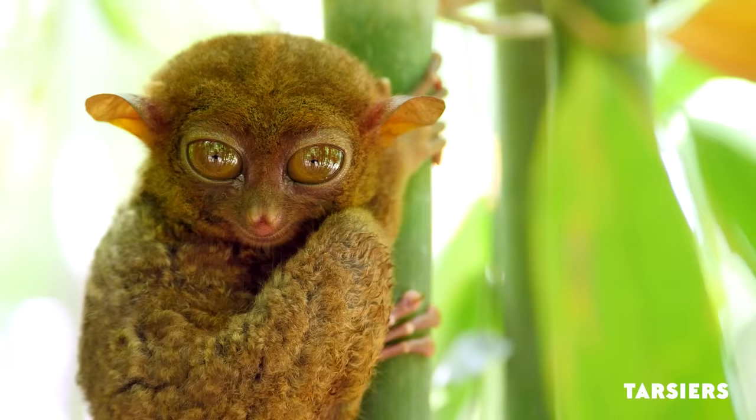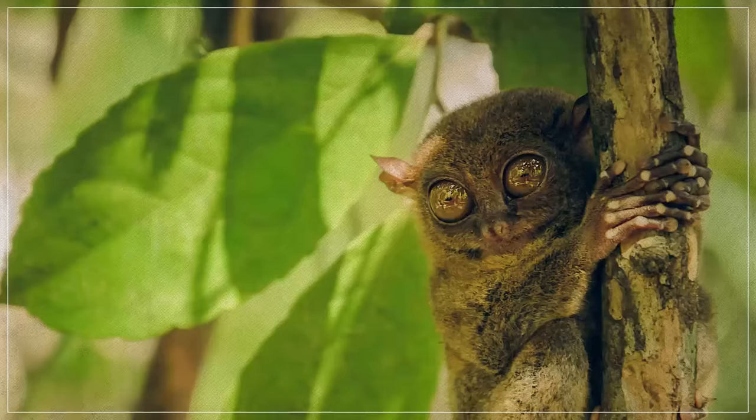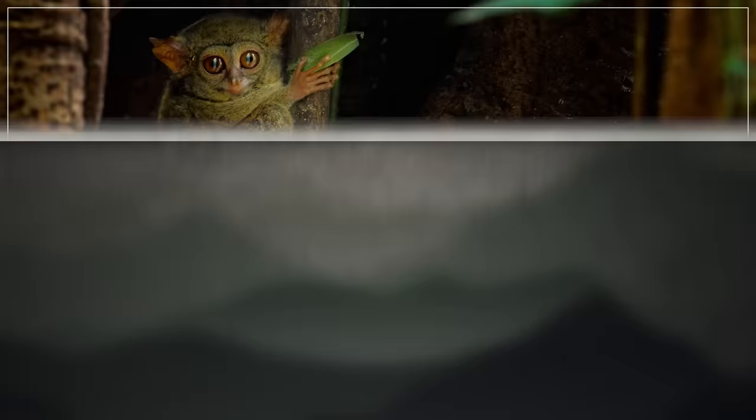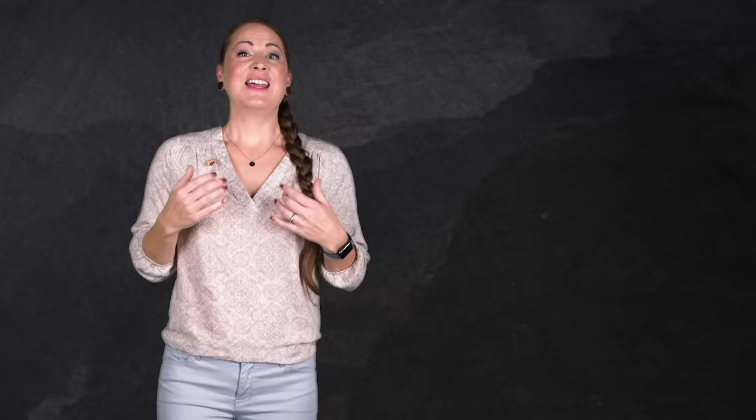Now, one rank up from infraorder is suborder. And ours is Haplorhini. This includes us, the other apes, the monkeys, and the Tarsier, which is the only primate that exclusively eats other animals, generally insects and small vertebrates. Haplorhines, like you, have dry noses, broad, flat incisors, and eye orbits that are at least partially enclosed with bone at the back. Tarsiers and simiiformes might have parted ways as far back as 65 million years ago, in the early Paleocene, shortly after the extinction of the non-avian dinosaurs.